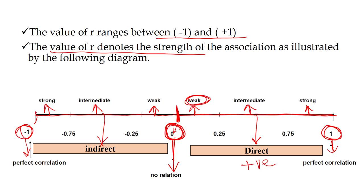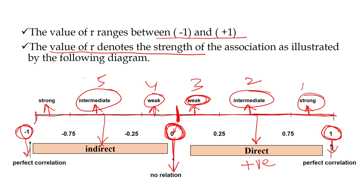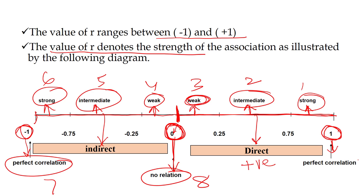So remember 9 types: 1, 2, 3, 4, 5, 6, 7, 8, and 9. You have 9 values and 9 types of relationship — 4 types positive, 4 types negative, and 1 is zero.